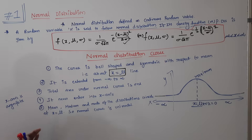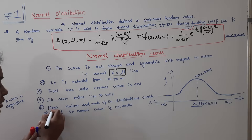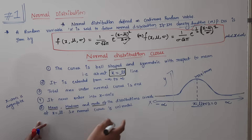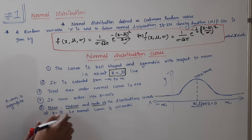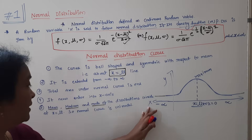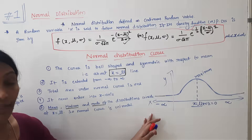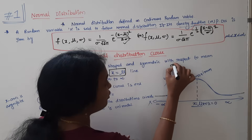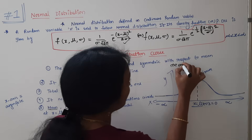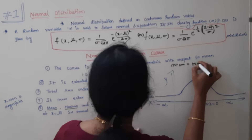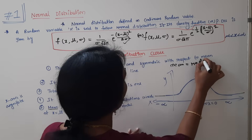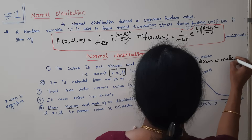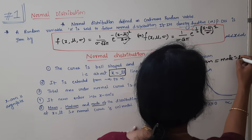Let us look at mean, median, and mode. In the normal distribution, the mean, median, and mode all coincide. They all point to the same value, which is mu.